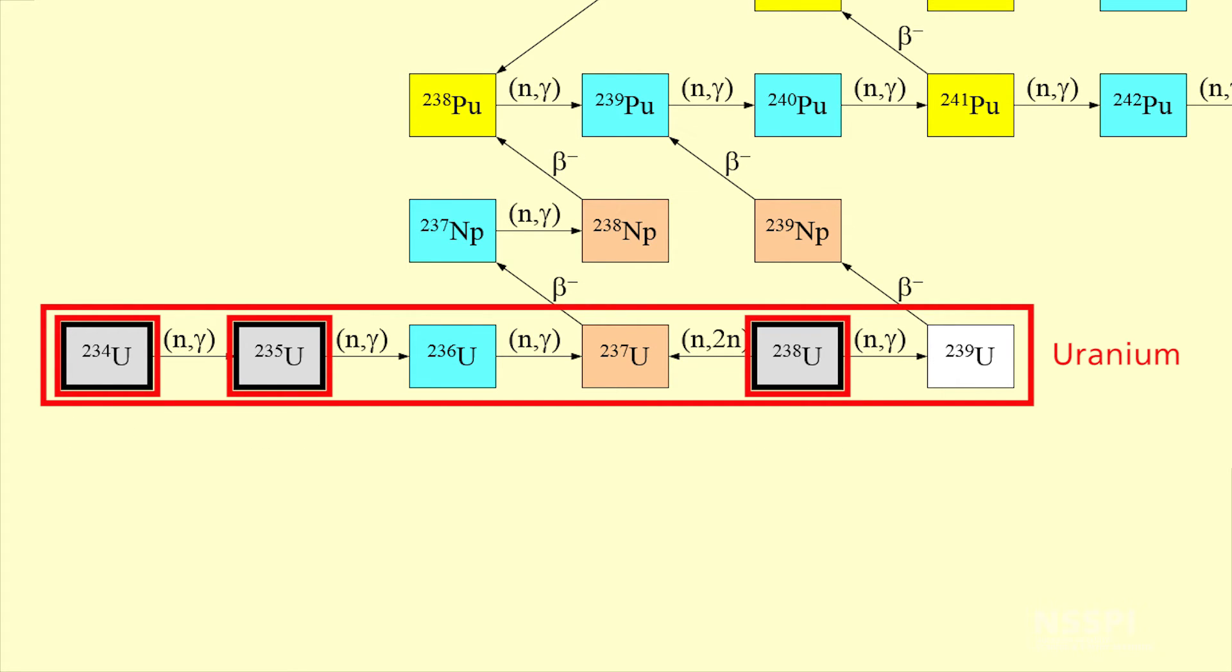Of those isotopes, when we want to use this in a nuclear reactor, we would like to enrich in the isotope U-235. Typically, power reactors would enrich the naturally occurring material from 0.7% to somewhere around 3% to 5% U-235.